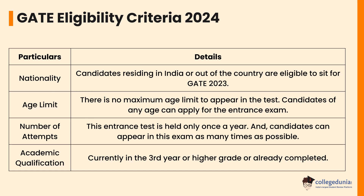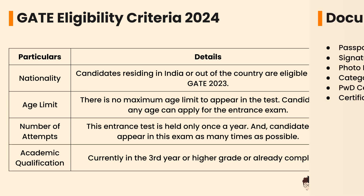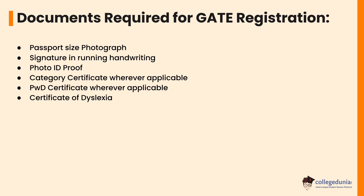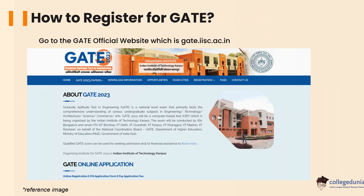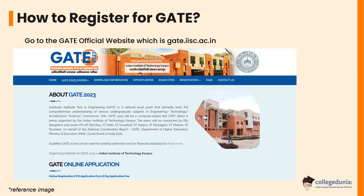The academic qualification for GATE eligibility requires candidates to currently be in the third year or higher grade, or already have completed their degree. The documents required for GATE registration include: passport size photograph, signature in running handwriting, photo ID proof, category certificate wherever applicable, PWD certificate wherever applicable, and certificate of dyslexia.